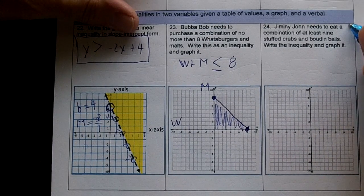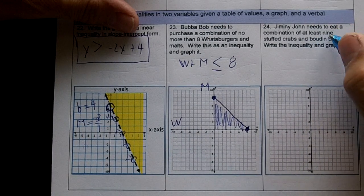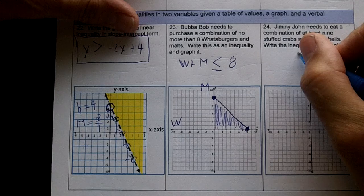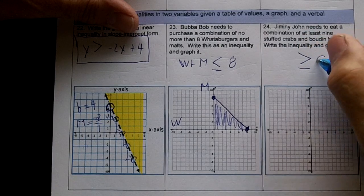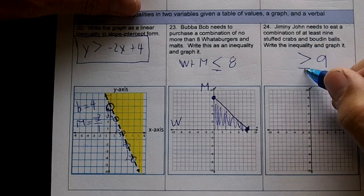Next one, Jiminy John needs to eat a combination of at least nine. At least nine is greater than or equal to nine.